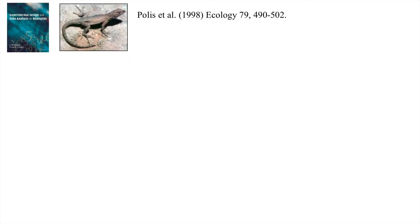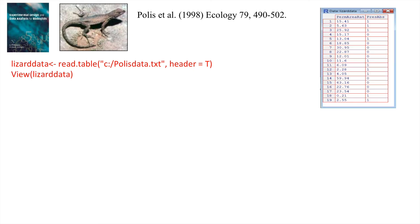Let's have a look at it in practice. This is data from Gary Polis, which was reported in a really nice book by Quinn and Keough called Experimental Design and Data Analysis for Biologists. The data refer to the presence or absence of lizards on islands of different perimeter-to-area ratios. First, I'm going to read that data in. I'll call it lizard data that I'm reading from a text file called Polis data. Then I'm going to view the data, and here we can see the perimeter-to-area ratio of the islands and the presence or absence of lizards on those islands.